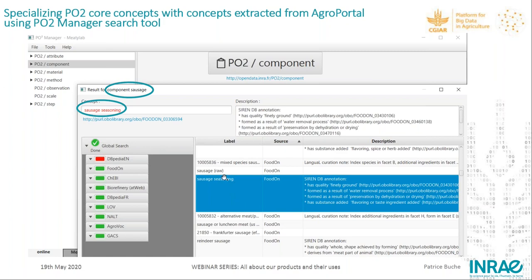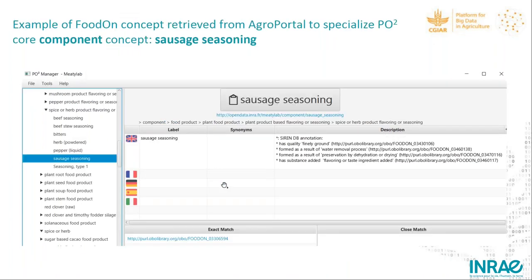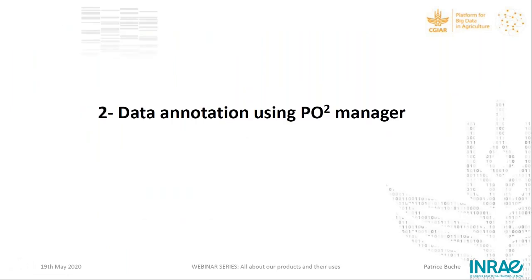We are interested in the sausage seasoning concept, and when you click on it, it is automatically included in the domain application part of the PO2 core component concept. You do that for all the different concepts you need to describe your food process, and when done you can switch to the data annotation using PO2 Manager as well.